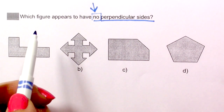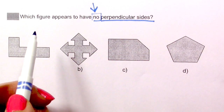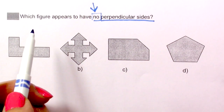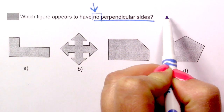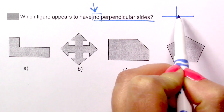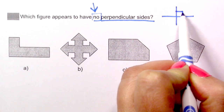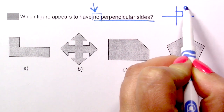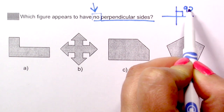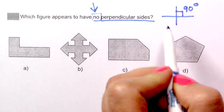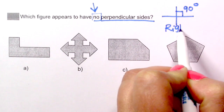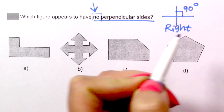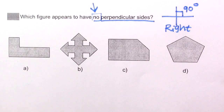But do you know what a perpendicular side is? It forms right angles — 90-degree angles — and we're about to find them inside of the shape.